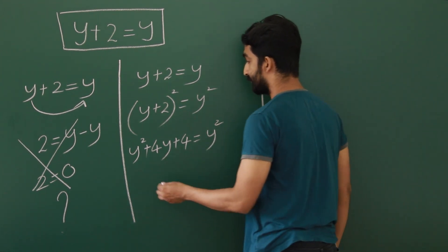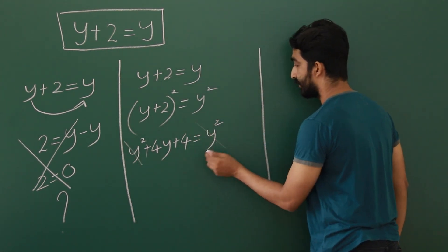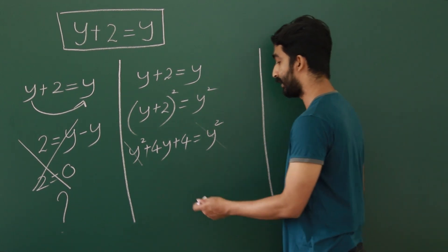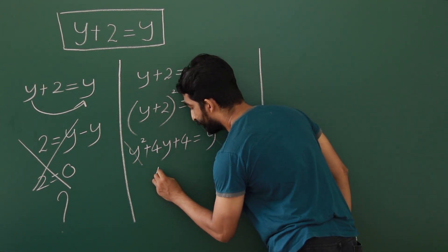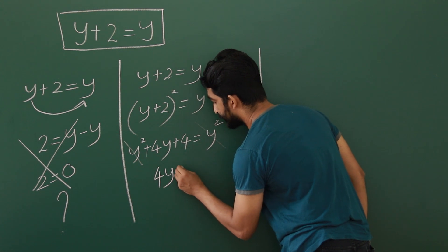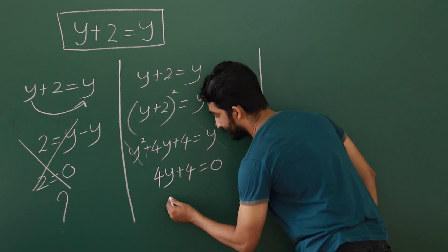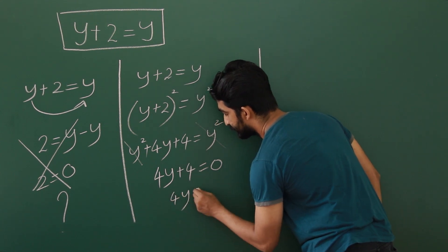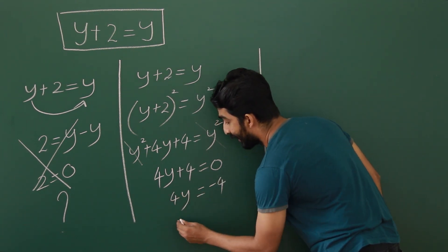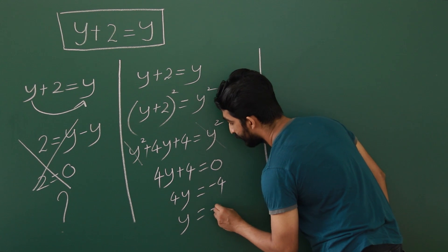This y square and this y square will cancel off, so you have 4y plus 4 equals 0. There you get 4y equals minus 4 and y equals minus 1.